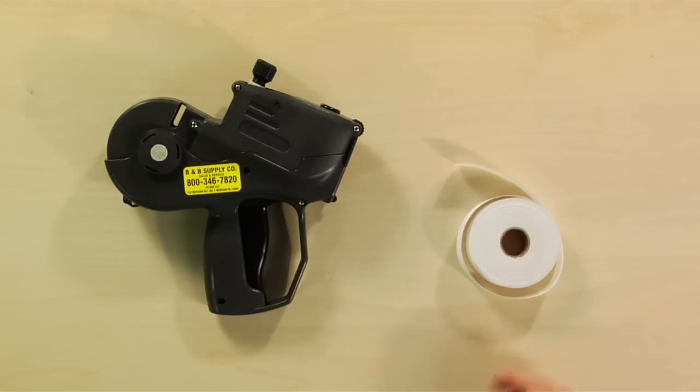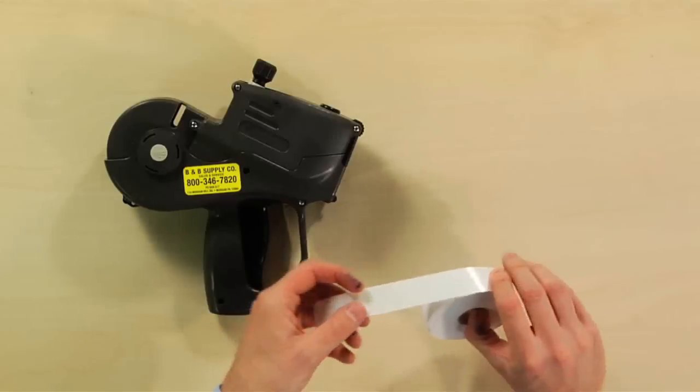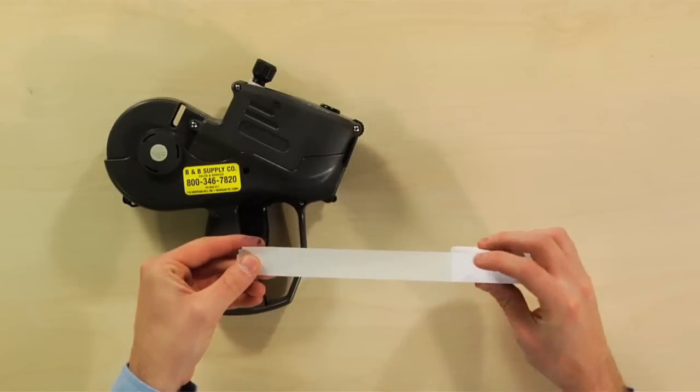Then, pick off about 5 to 6 inches worth of labels so you start with just a strip of backing paper.